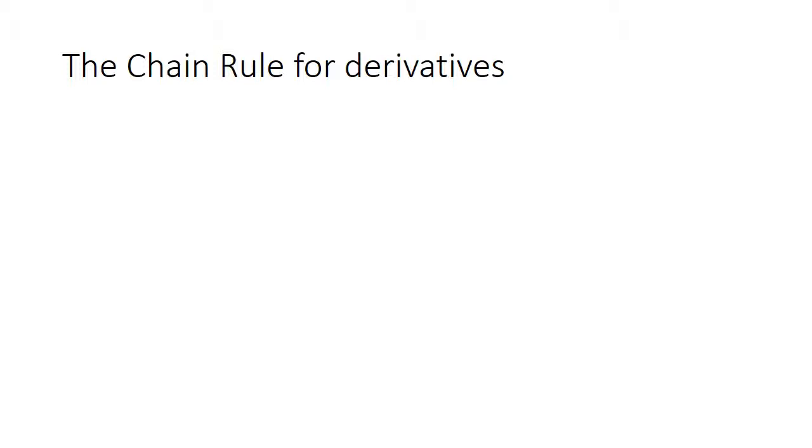The chain rule. Chain rule is very important. It simply says, if you're taking the function of a function, f of g of x, take the derivative of the outside function acting on g of x, then take the derivative of the inside function. And here's an example.